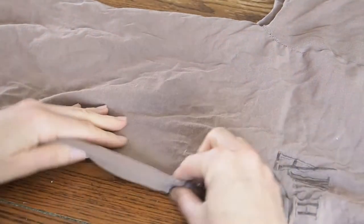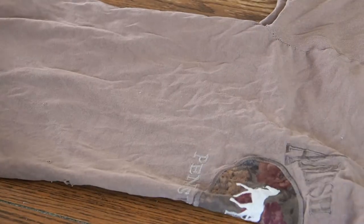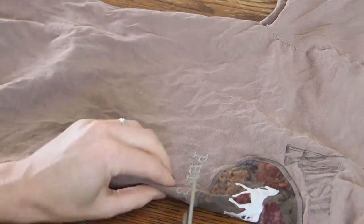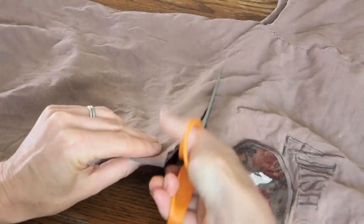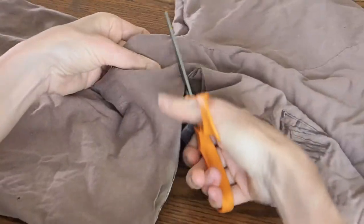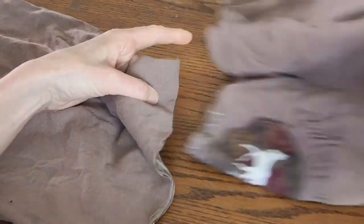Next, since this t-shirt does have a print at the top and some embroidery, we're just going to cut that off at the top. So we will go to the bottom of our embroidery and cut straight across. And then we will use that bottom part of the t-shirt to create our yarn.